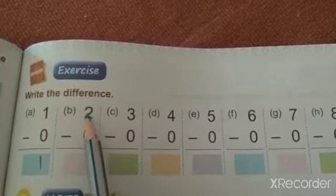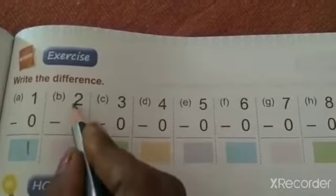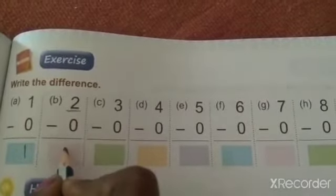Write the difference. So 1 minus 0. 1 minus 0 means? Answer is the number itself means 1. Then 2 minus 0 means we subtract 0 from 2. So the answer is the number itself means answer is 2 only.